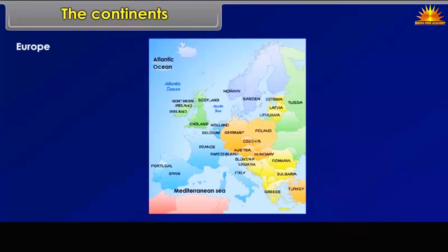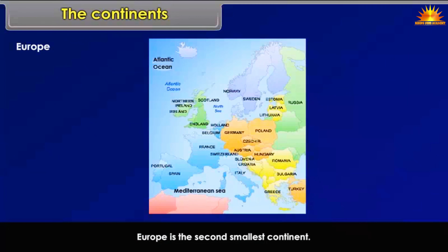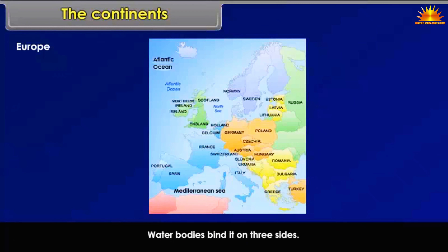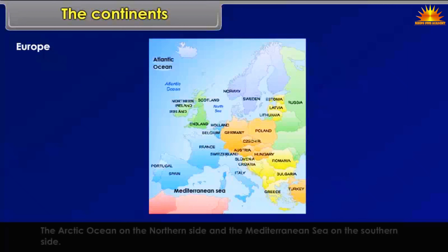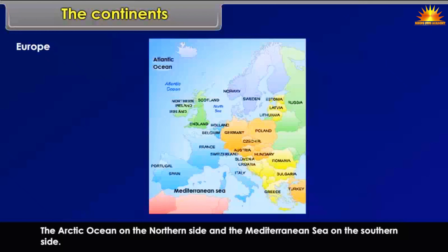Europe is the second smallest continent. Water bodies bind it on three sides: the Atlantic Ocean on the western side, the Arctic Ocean on the northern side, and the Mediterranean Sea on the southern side.